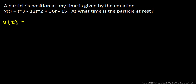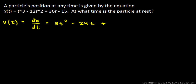v(t) will be the derivative of position with respect to time. Just apply the power rule to each term, and that gives us 3t² - 24t + 36.